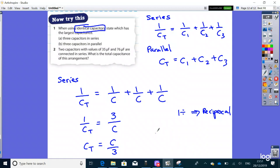For the parallel arrangement, the total capacitance is C + C + C. Therefore, CT = 3C.